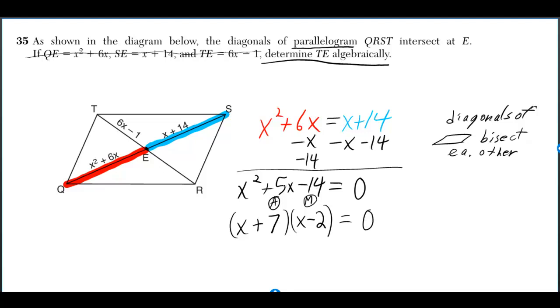7 plus negative 2 is 5. 14 times negative 1 would have given us negative 14 as well, but 14 plus negative 1 would give us 13, and we're looking for 5.